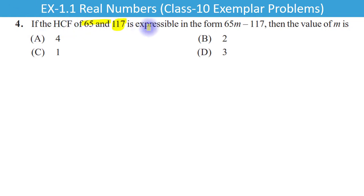Jab n even ho to n minus 1 odd ho jayega. Question number 4: 117 is expressible in the form 65m minus 117, then the value of m is — hamen m ki value find out karni hai.